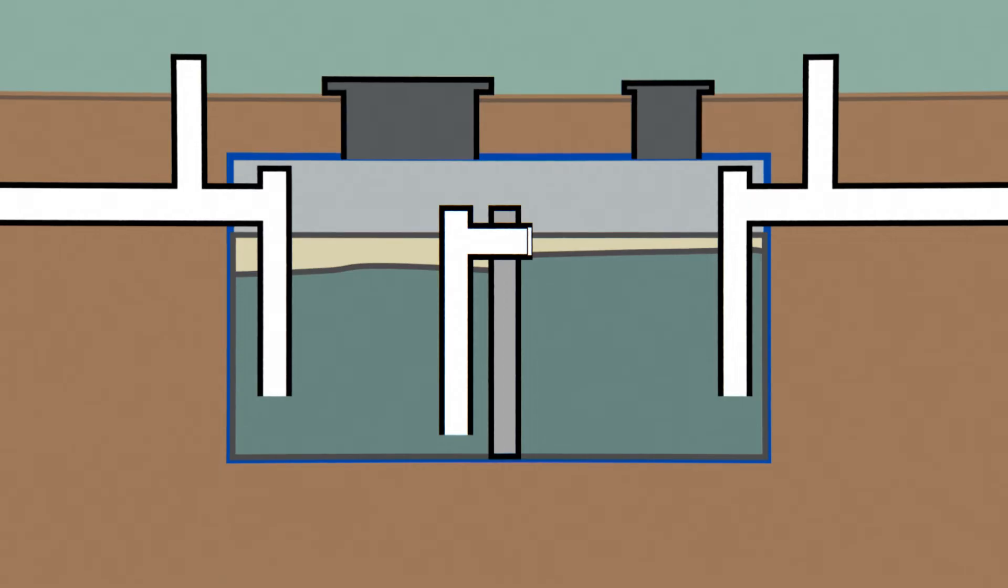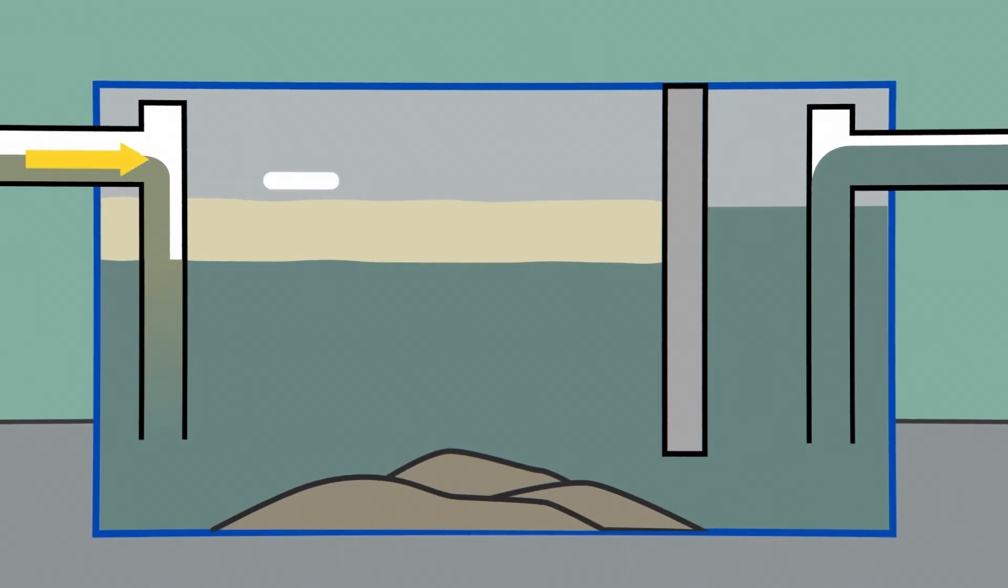But in general, the separation occurs because grease and oil are lighter than water and rise to the top, while food waste settles to the bottom, allowing clean water to leave from the lower part of the interceptor.